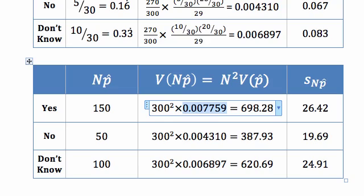You can consider the variance of the proportion, which was 0.5, or the variance of the number, which is 150. The difference is that we times it by 300 squared. Here is the variance. 698 is our variance of the number of people that said yes in the population. The standard deviation is the square root of that, simple enough. You can do that again with no and don't know.